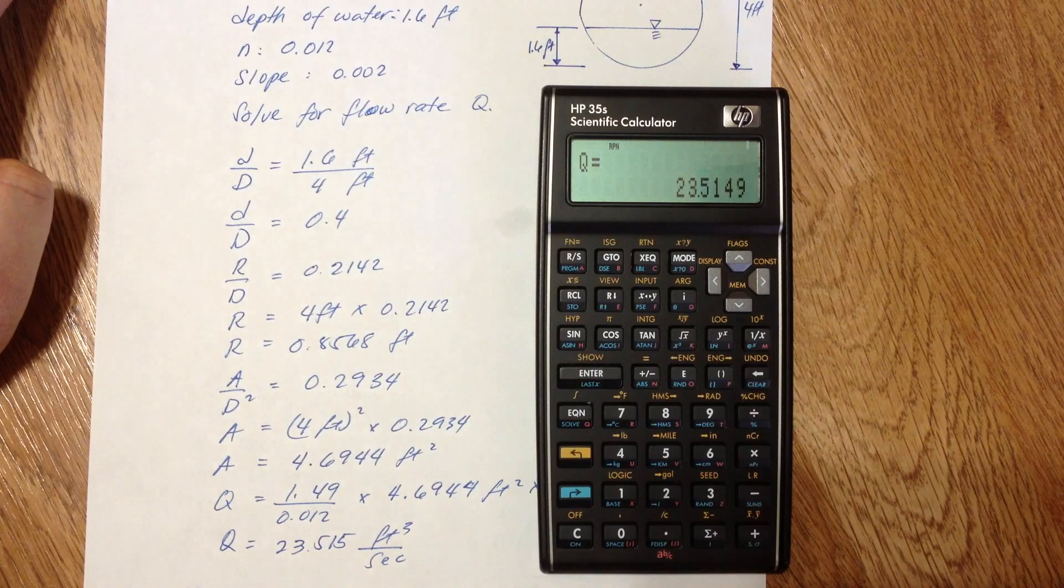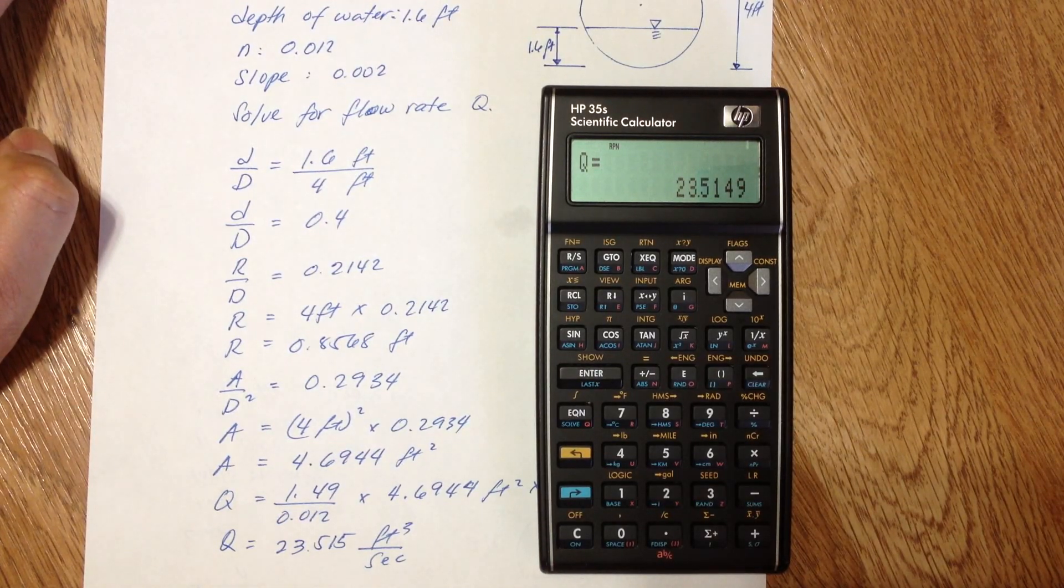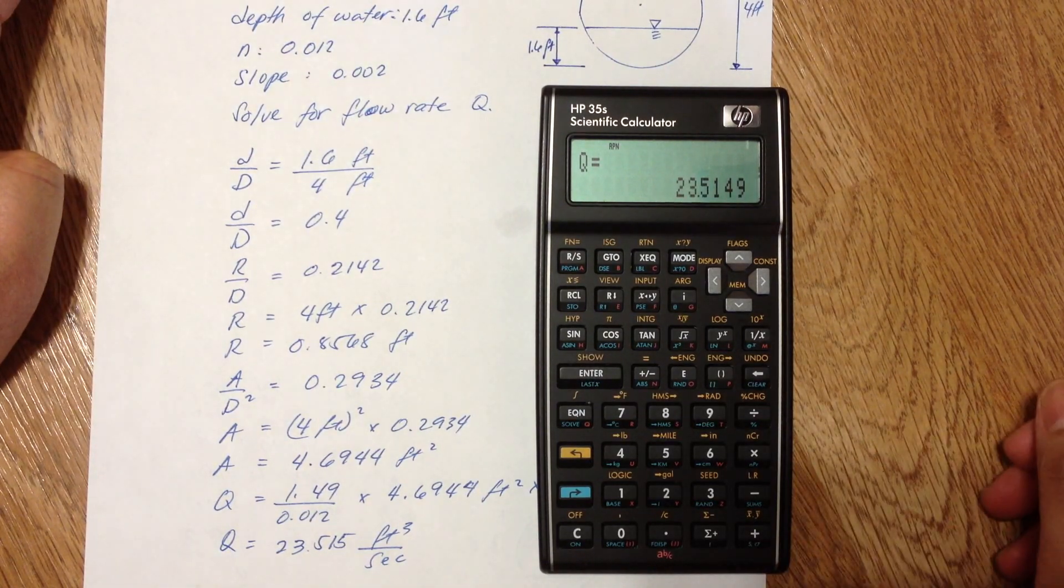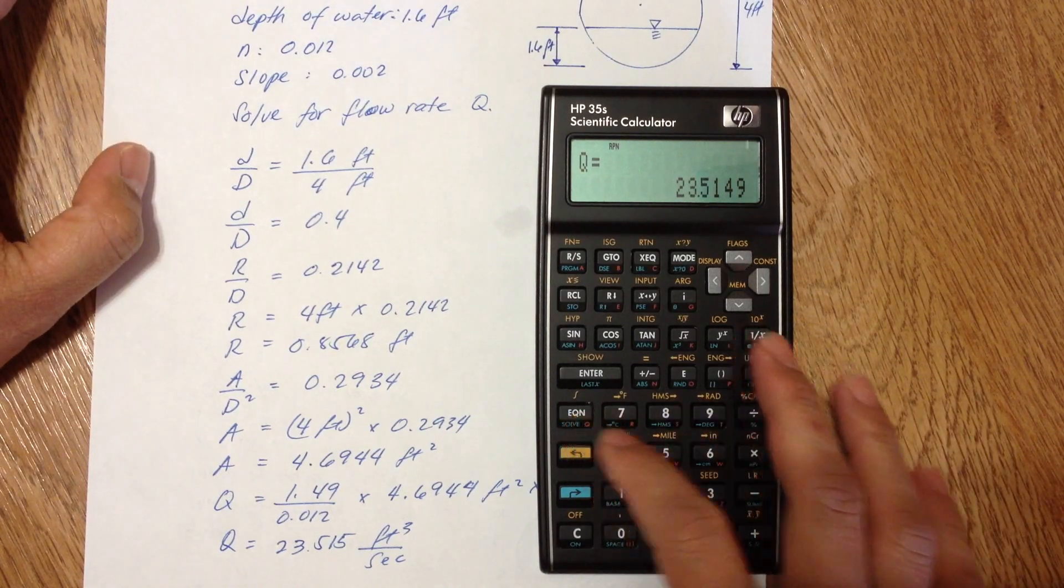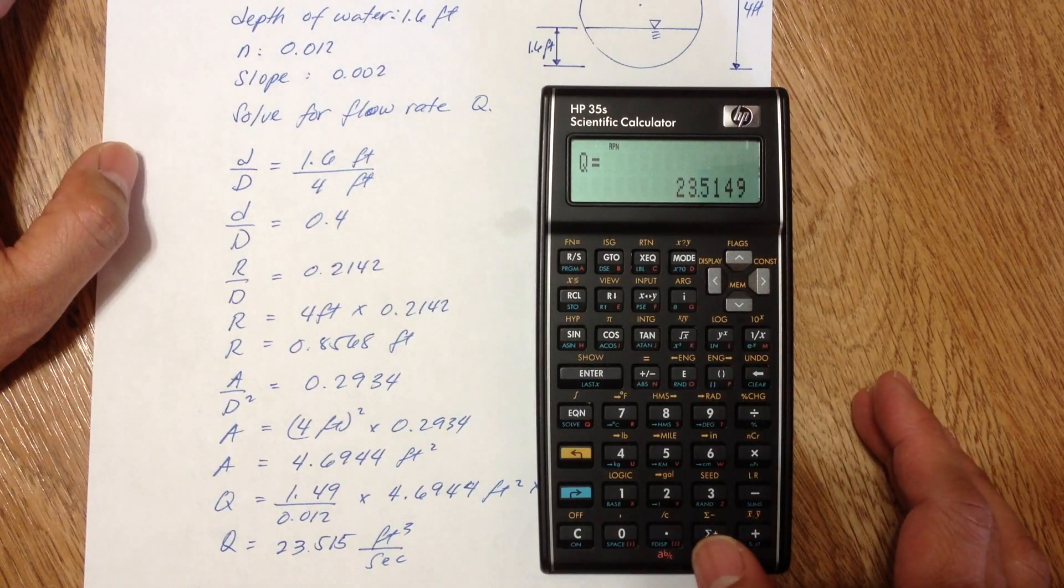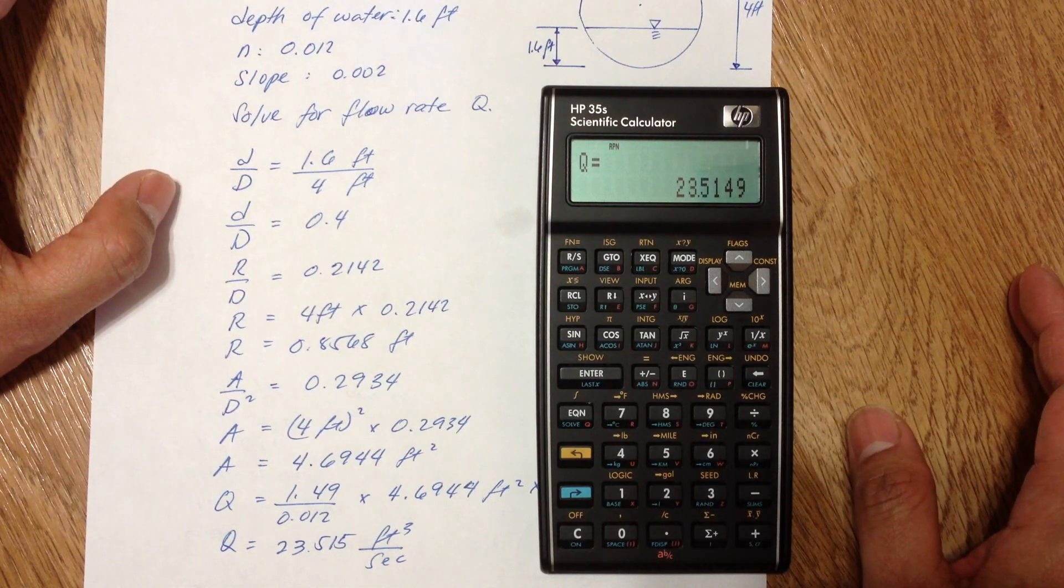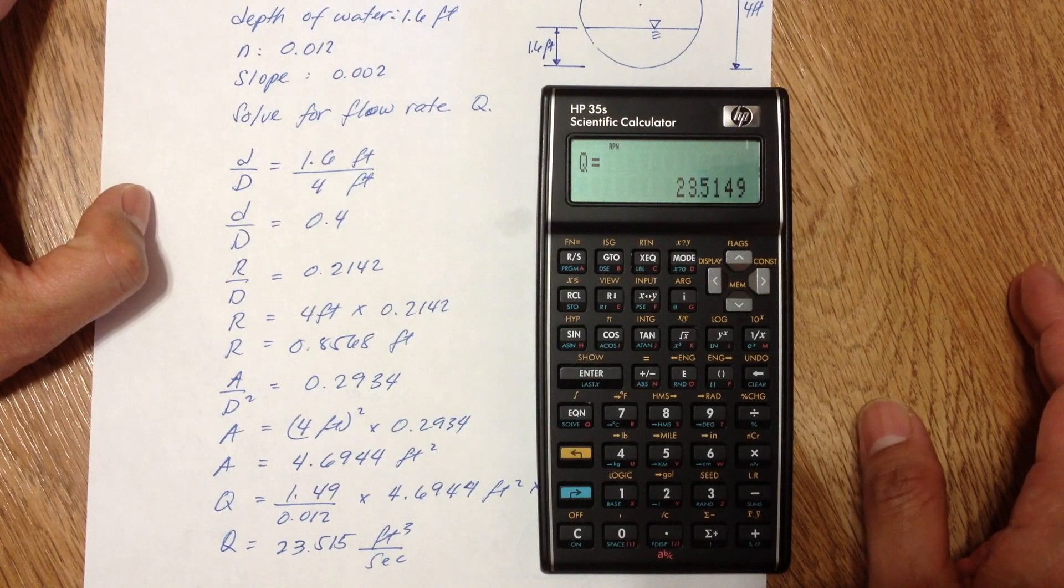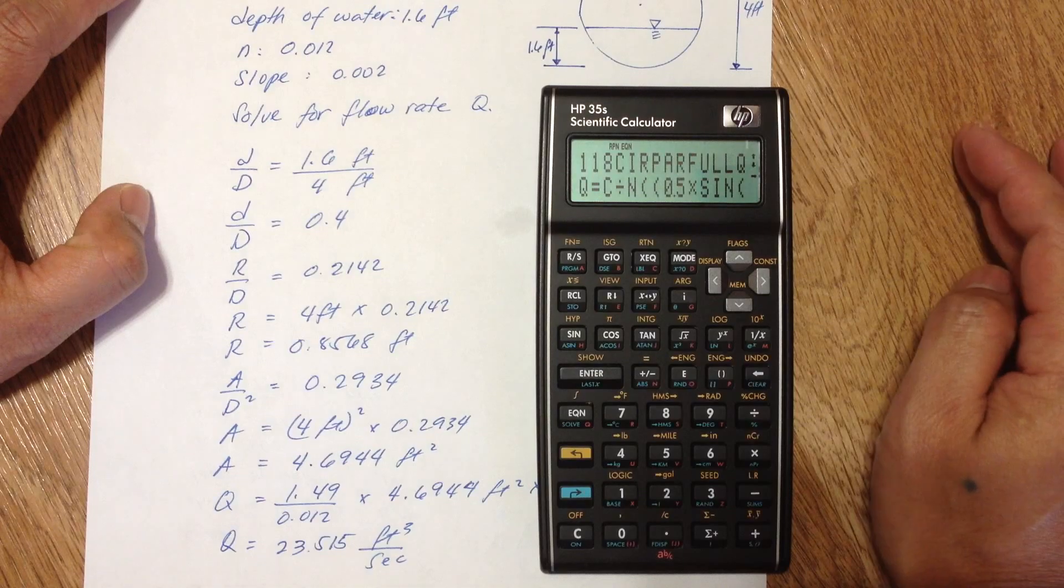So that's how you solve the flow rate partially full. And not only can you calculate the flow rate, you can also calculate the slope. Let's say if the given values are Q and diameter, if you need to find the slope, just go to the equation, the same equation.